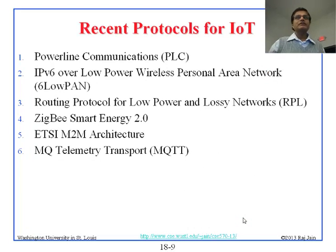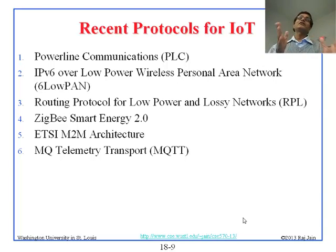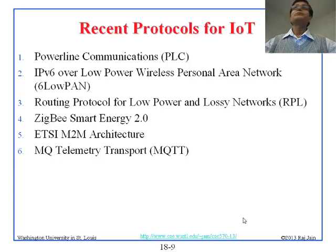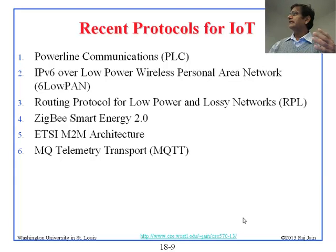Recent protocols for IoT. If you read the books on IoT they go on talking about how good IoT is and what you can use it for. But we are networking guys, so let's go back to networking. Here are some protocols that are new — meaning last three to four years. Power line communication is not last four years, but the latest version of it. IPv6 over low power, routing protocols over low power, ZigBee, HCM2M, and MQ telemetry — these are all things which happened in the last five years.